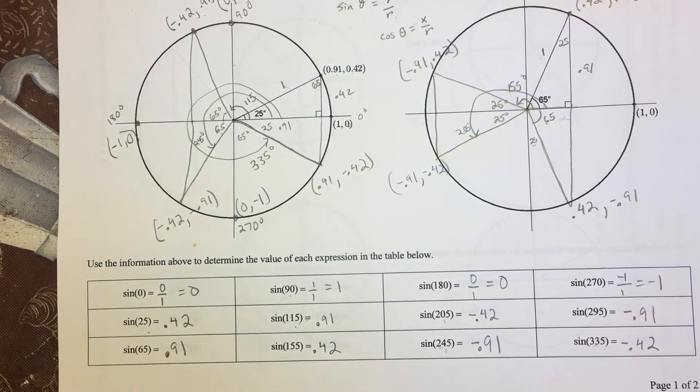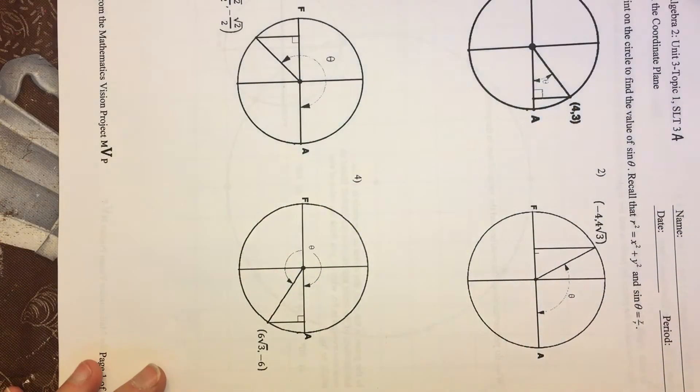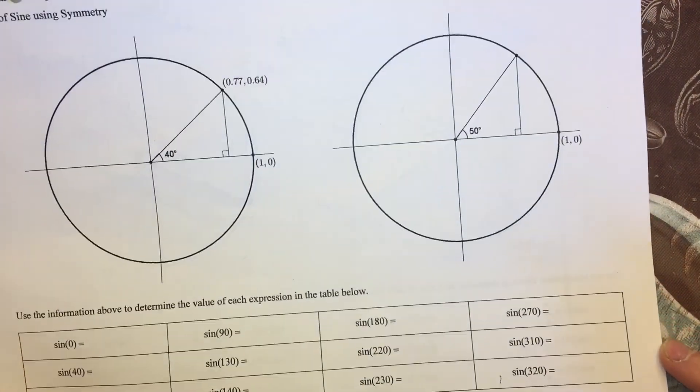So hopefully that helps you find the values of sine using the symmetry of the circle. If you turn the page and you look at the back that you are also expected to do for homework, it is really, really similar, and hopefully this will be a piece of cake.